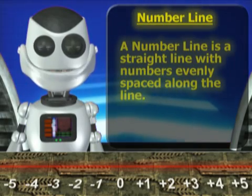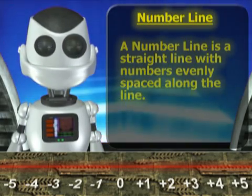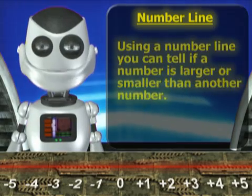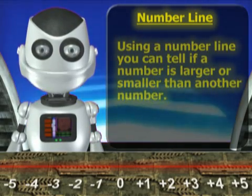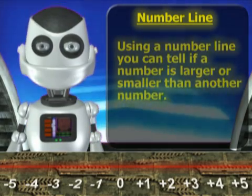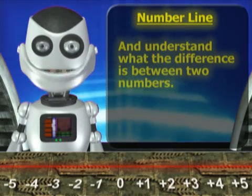A number line is a straight line with numbers evenly spaced along the line. Using a number line, you can tell if a number is larger or smaller than another number and understand what the difference is between two numbers.